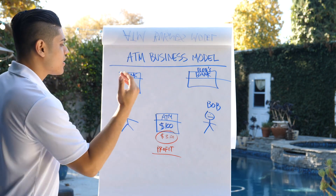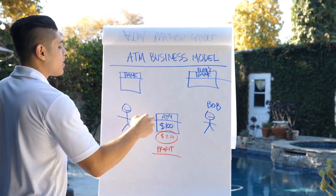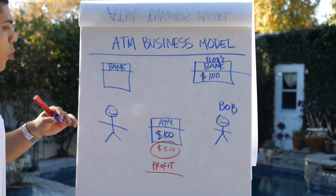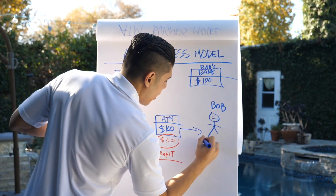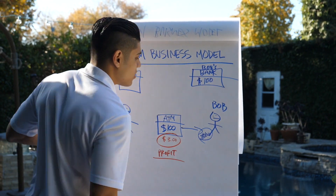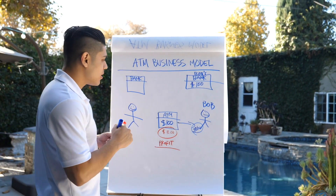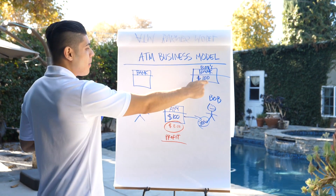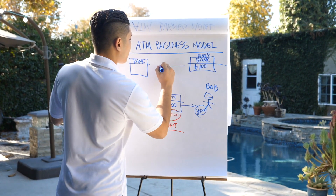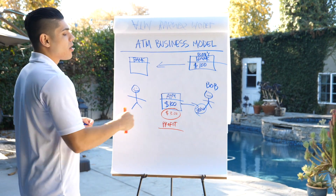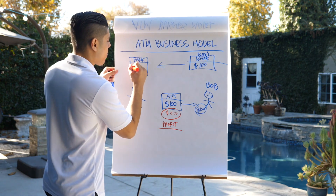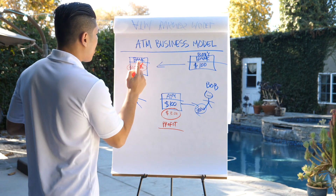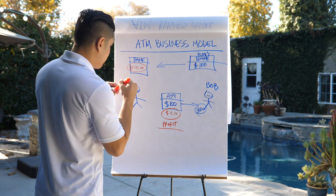He's going to put in his debit card and his pin. Your ATM machine is going to verify that Bob has a hundred dollars in his bank account. Once it verifies that Bob has the money, your ATM will dispense a hundred dollars to Bob — Bob's happy. Because he took out a hundred dollars and you charged him a three dollar surcharge, it's going to debit Bob's account and credit your account. Instead of getting a hundred dollars back, you're getting a hundred dollars back plus that three dollar surcharge.